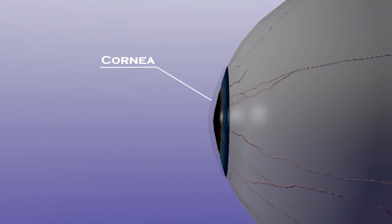First, it acts as a barrier preventing germs, dirt and other harmful material from entering the inner eye. Secondly, the cornea acts as the eye's outermost lens.